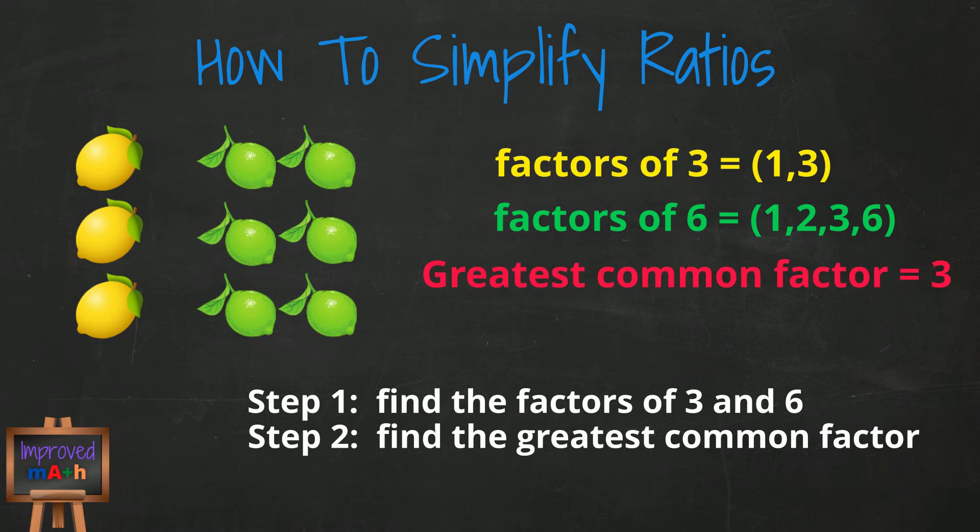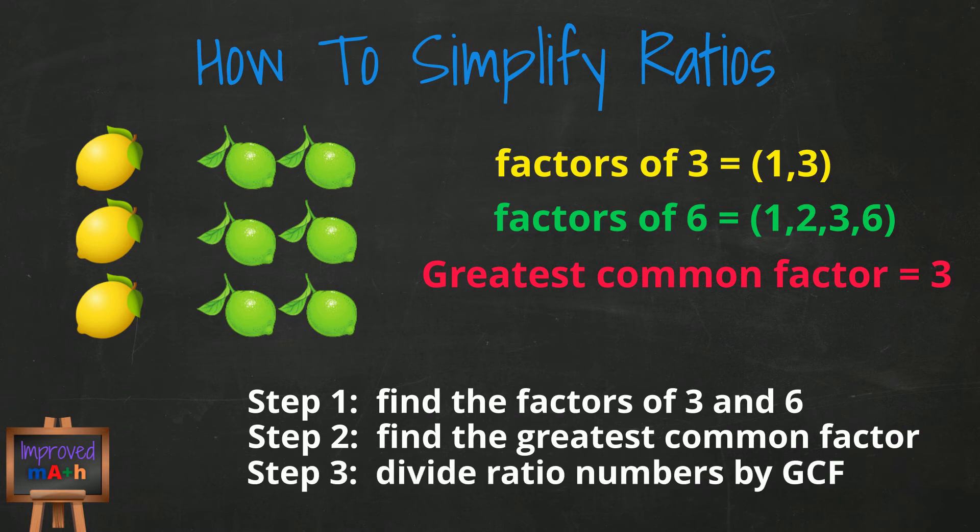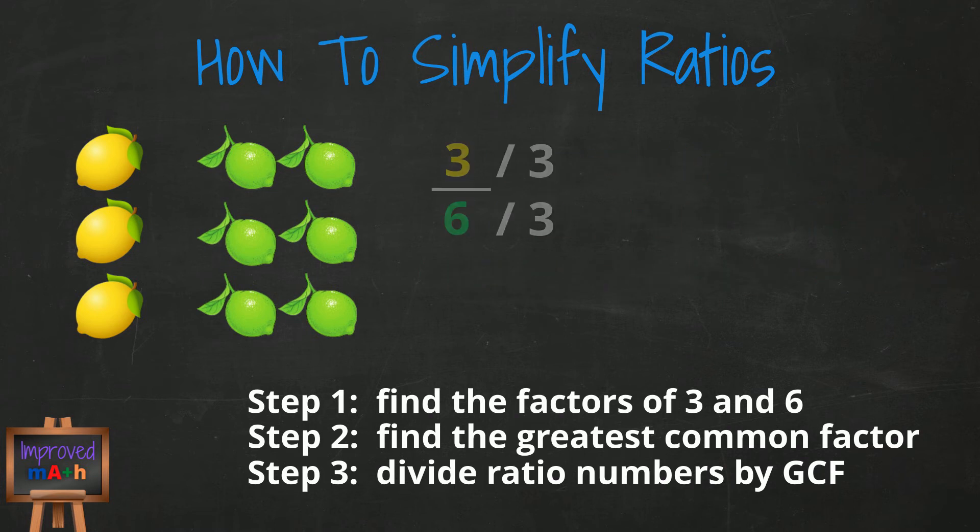Step 3: Divide the numbers in our ratio by the greatest common factor. 3 goes into 3 one time and 3 goes into 6 two times. By dividing both numbers by 3, we now have simplified our ratio to be 1 to 2. So by looking at it visually, 3 lemons to 6 limes is the same thing as saying for every 1 lemon, there are 2 limes.